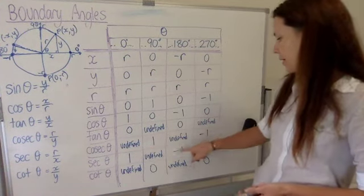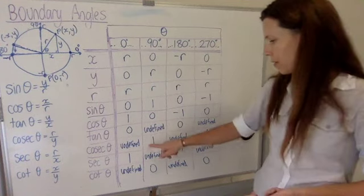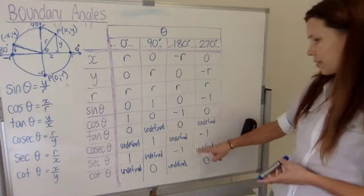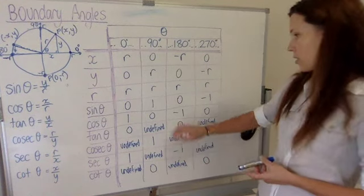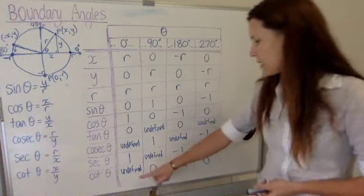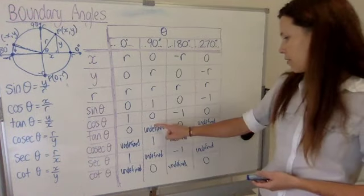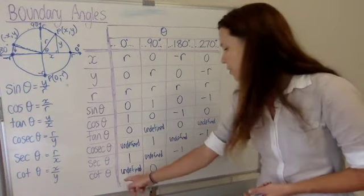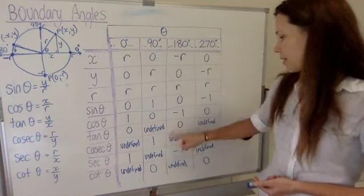Cosec: undefined, one, undefined, minus one, undefined, one, undefined, minus one. These two look very similar just as cos and sine look very similar. And you notice that tan and cot look very similar. They're undefined every 180 degrees, aren't they? Except these ones are offset with those ones, and the others are zero.